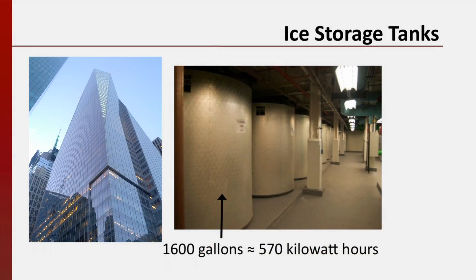One way we can decrease the amount of electricity needed in the daytime to cool a building is to use the energy storage capacity of ice, or its latent heat of melting. Large tanks, such as these in the basement of the Bank of America Tower in New York, store water that is frozen overnight using cheap electricity. During the day, the ice melts and absorbs energy from the cooling fluid running through the building's air conditioning system. Each of the tanks holds approximately 1,600 gallons of water, which translates to roughly 570 kilowatt hours of cooling capacity. Bank of America reports that these ice tanks supply 25% of their cooling energy annually.